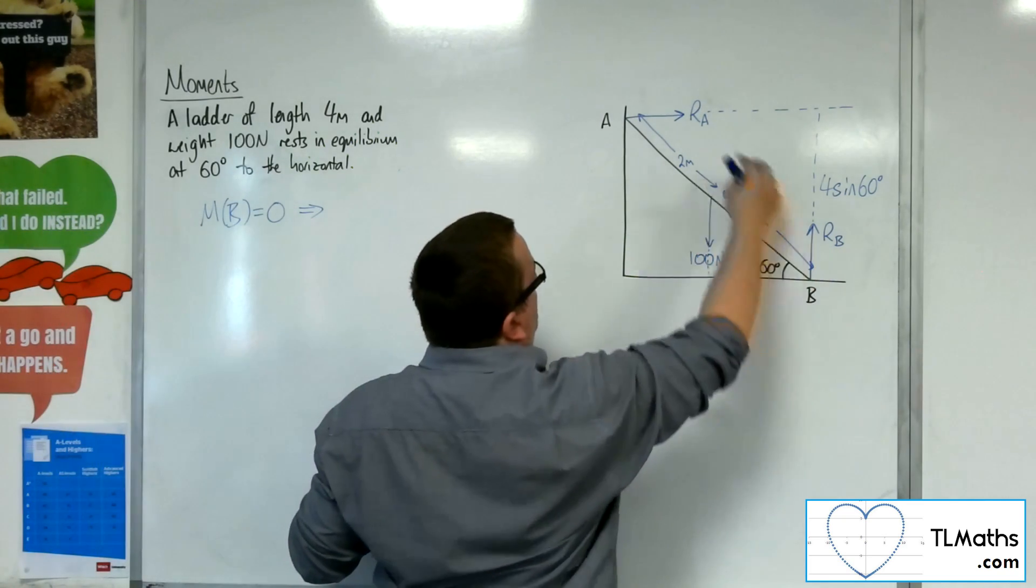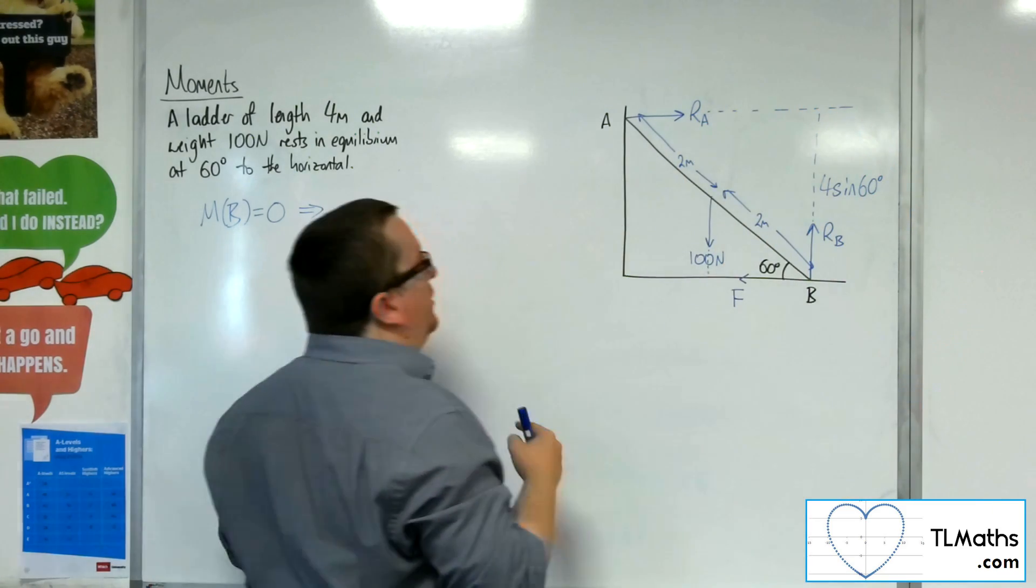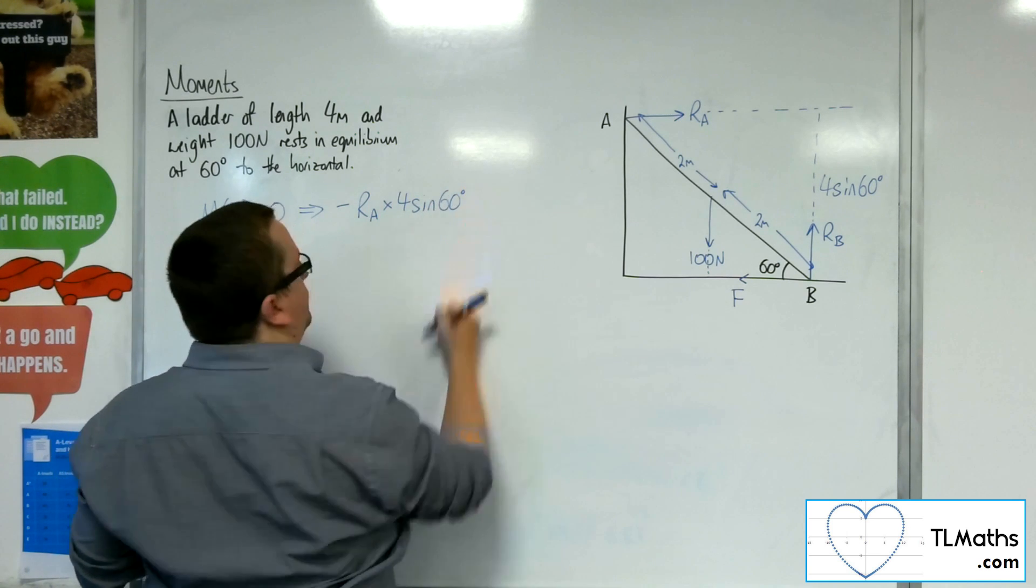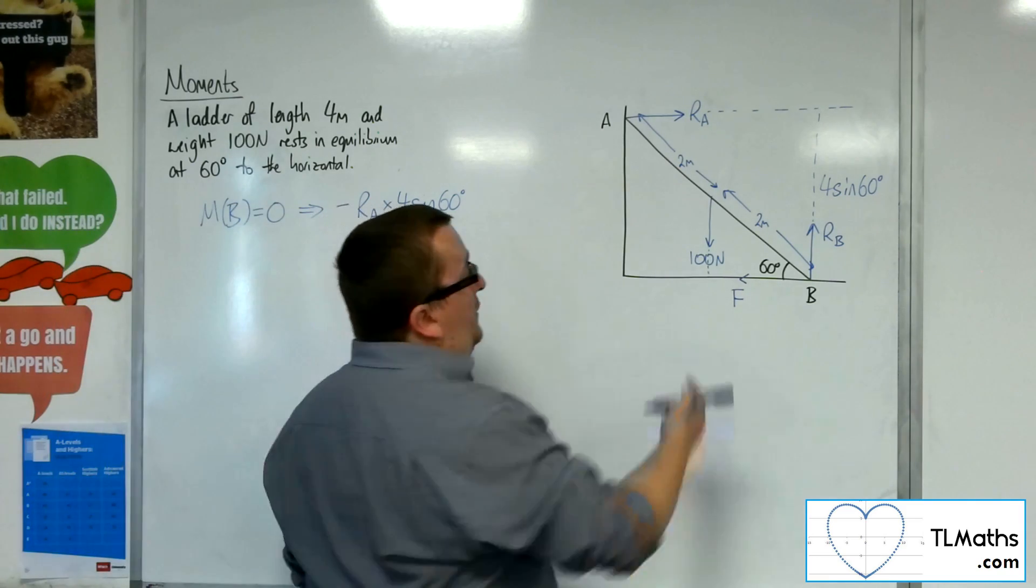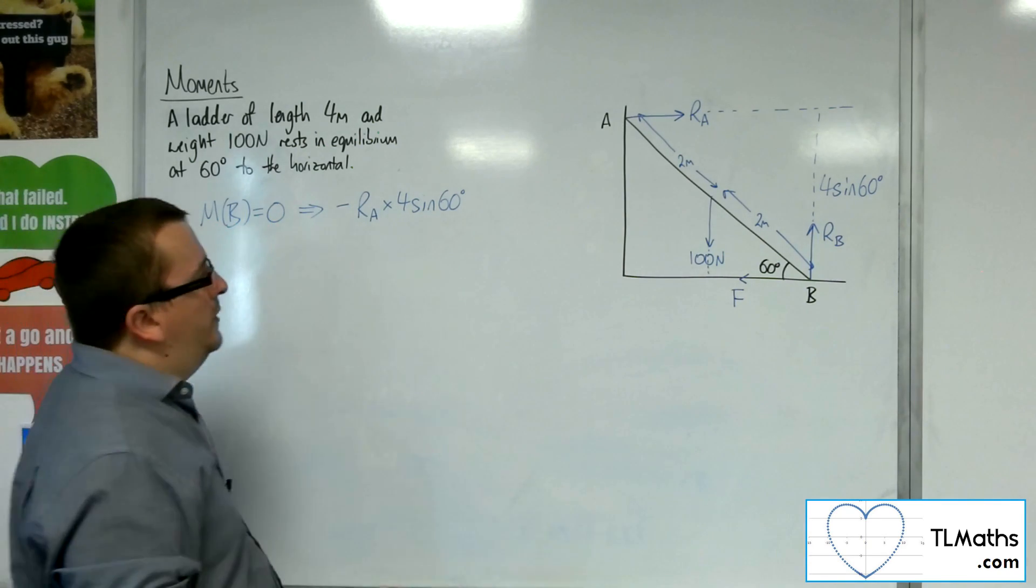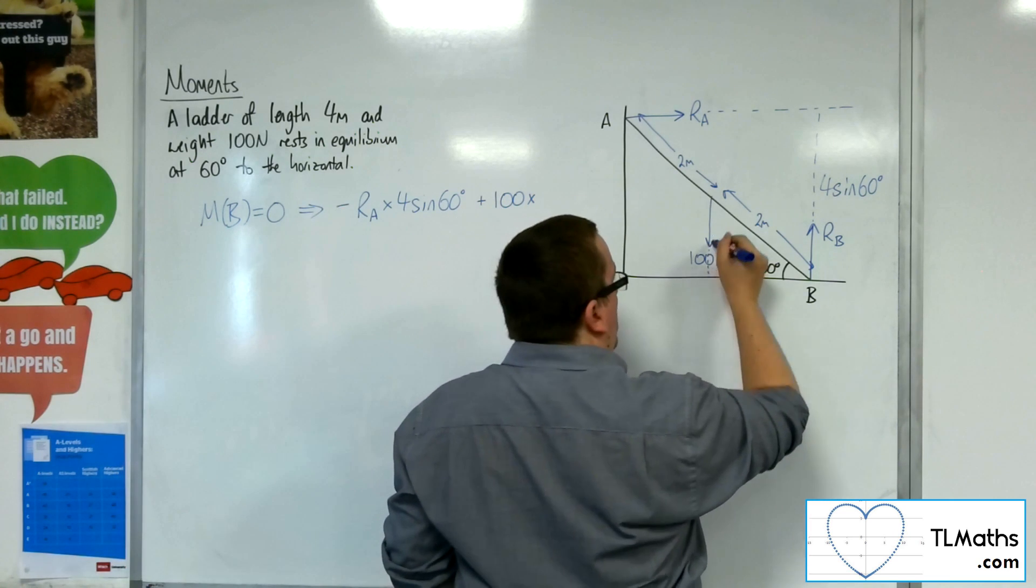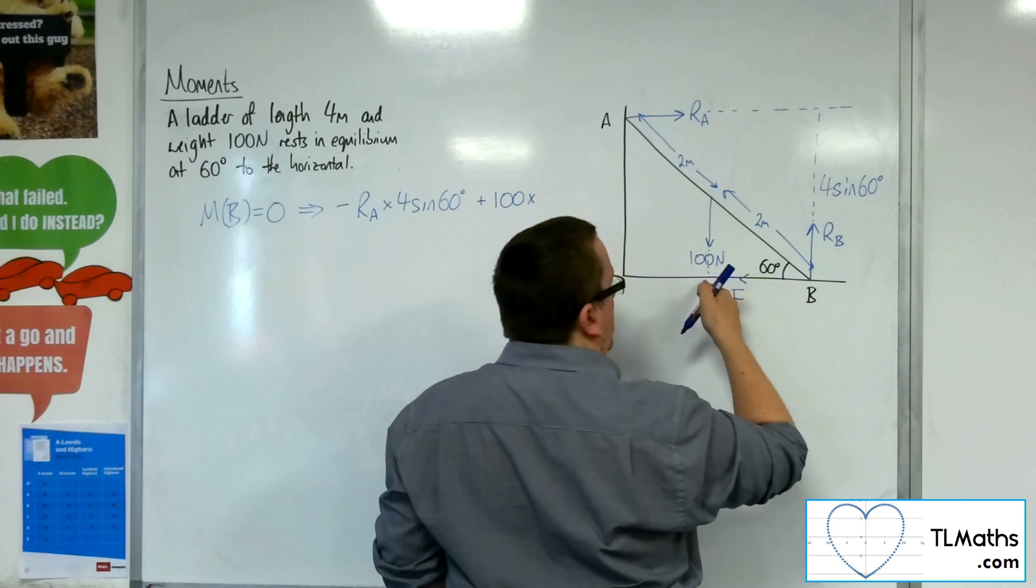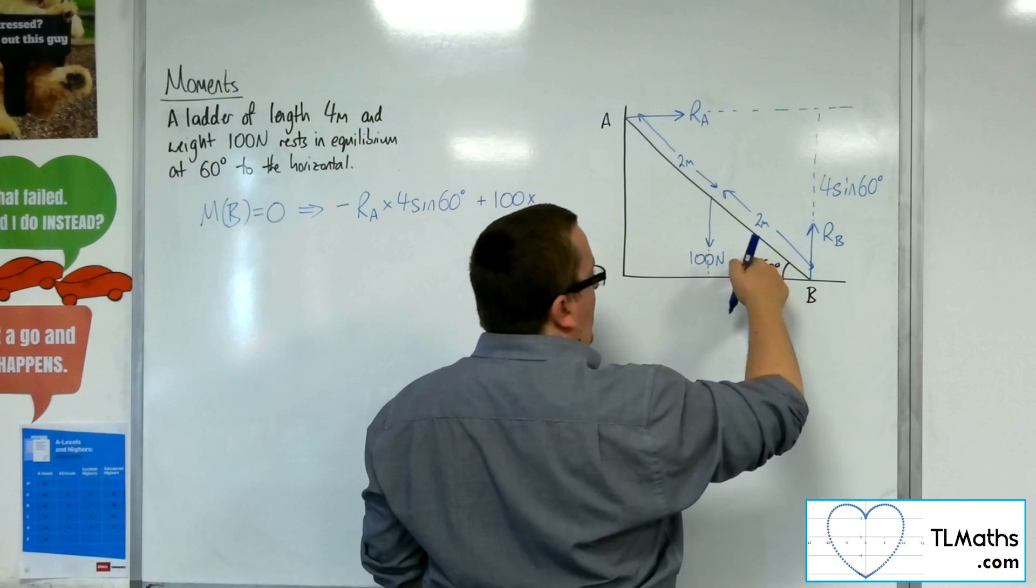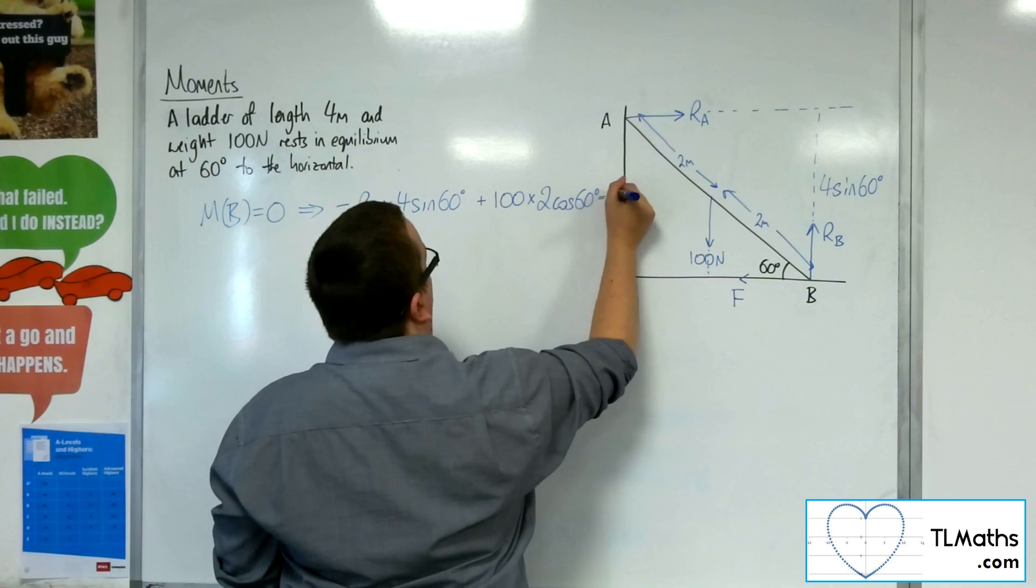So that means that, taking moments about B, I've got RA times 4 sine 60 is going around that direction, so it's going to be negative. So minus RA times 4 sine 60. Now, the other force is the 100 newtons. Now, that's going around in that direction. So that's going around anti-clockwise, so it's going to be positive. So plus 100 times, now, we need this distance here from B to the force. So if that's 2 meters, that's 2, that angle is 60, that will be 2 cosine 60.